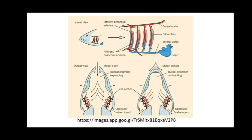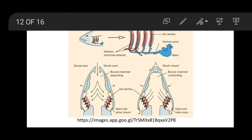This diagram shows inspiration and expiration in Scoliodon. This type of respiration is known as single-type circulation because the heart contains only venous or deoxygenated blood. The exchange of oxygenated blood takes place only in the gills. The heart is also called a venous heart because it receives only deoxygenated blood.